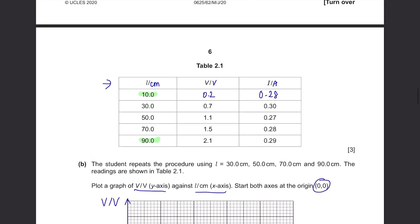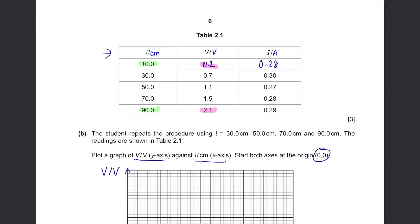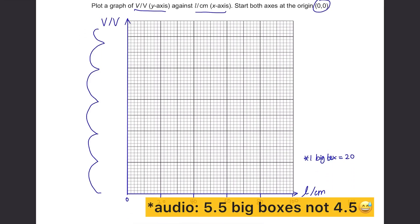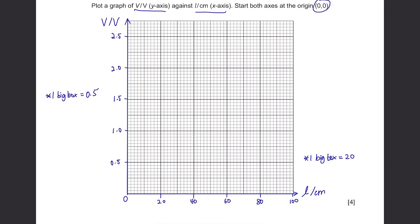For y-axis, we need to plot from 0.2 to 2.1 and we have 4.5 big boxes so let's set 1 big box as 0.5. Then plot the points and draw the graph.